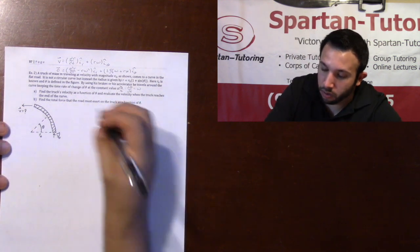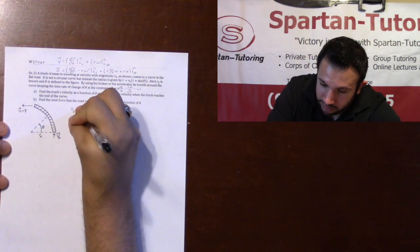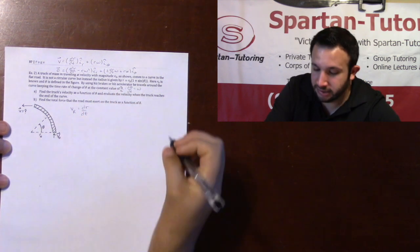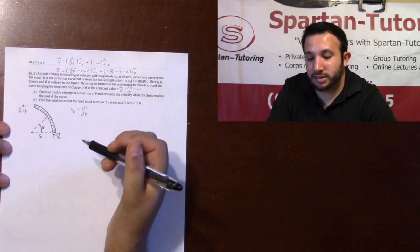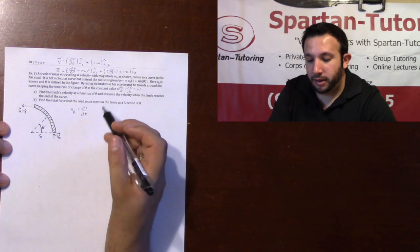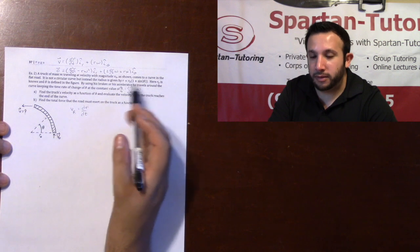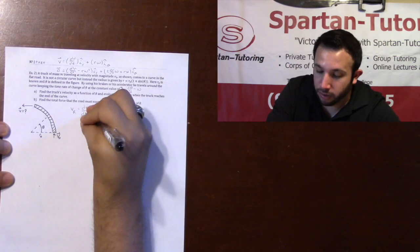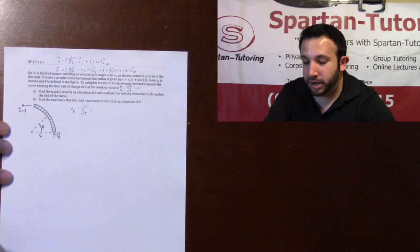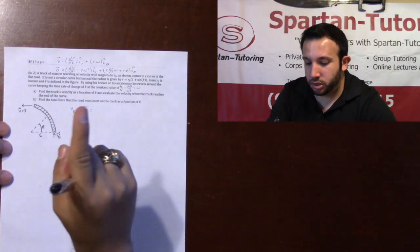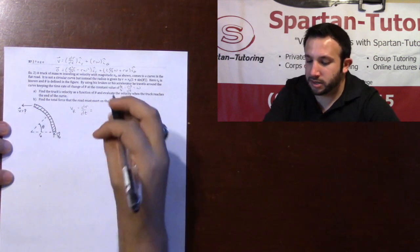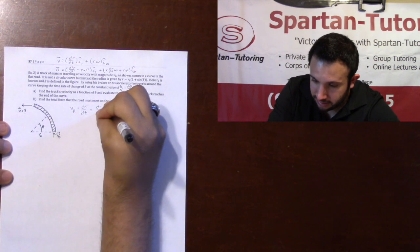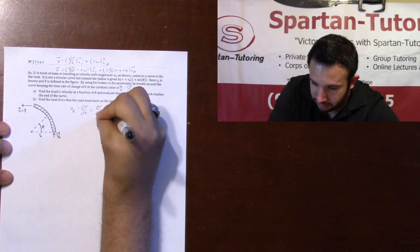First off, let's find v-r and v-theta. v-r is dr/dt. Your radius is changing with respect to time, but I have r as a function of theta. In this case, we're going to have to use a little chain rule. So if your r is changing but it's changing with respect to theta, what you're going to do 100% of the time is this is going to be (dr/dθ) times (dθ/dt).